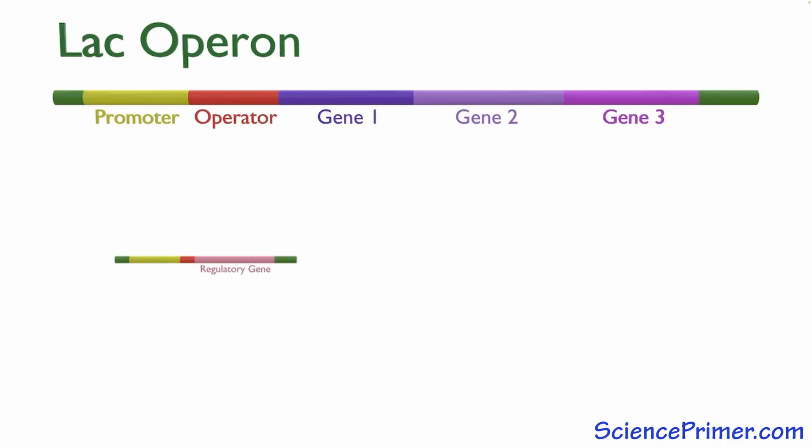The LAC operon is comprised of a promoter and an operator, and then three genes. LAC-Z, which encodes beta-galactosidase, an enzyme responsible for degrading lactose.